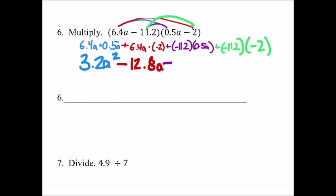And then we got a negative 11.2 times 0.5a, so that'll be a negative 5.6a, I think I did that right.